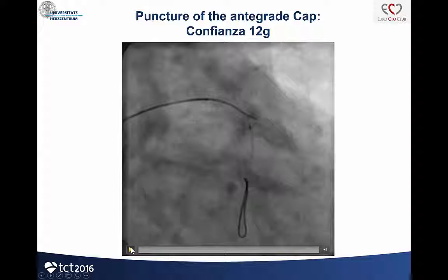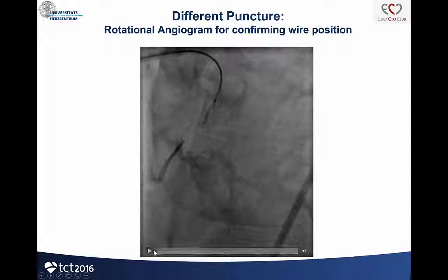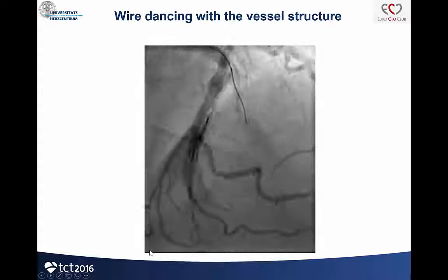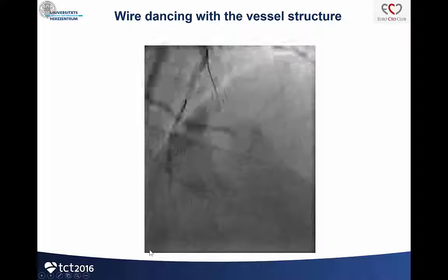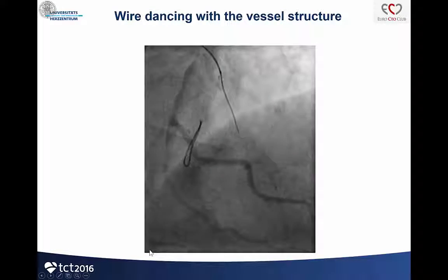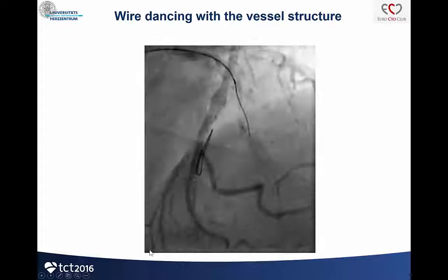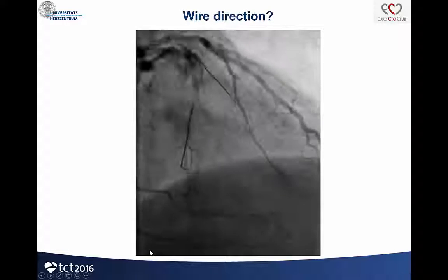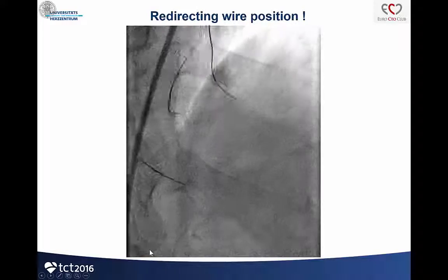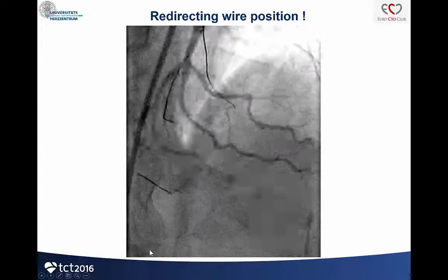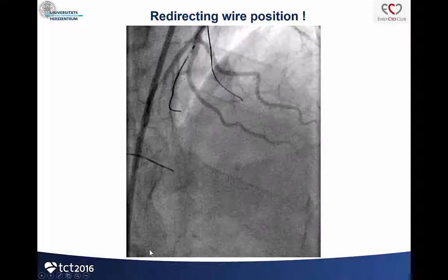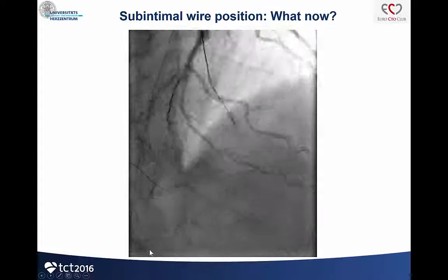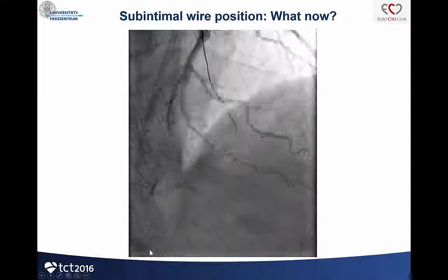I punctured without IVUS in the first setting and tried to achieve progress. The Confiancer 12-gram was not so bad and I could penetrate the proximal cap. I had a fine-cross 7-French approach. I did wire redirection and was nearly close to the distal landing zone, but not quite there. Wire redirection was not bad but not perfect. If I continue here, I will have a lot of hematoma compressing my small vessel.